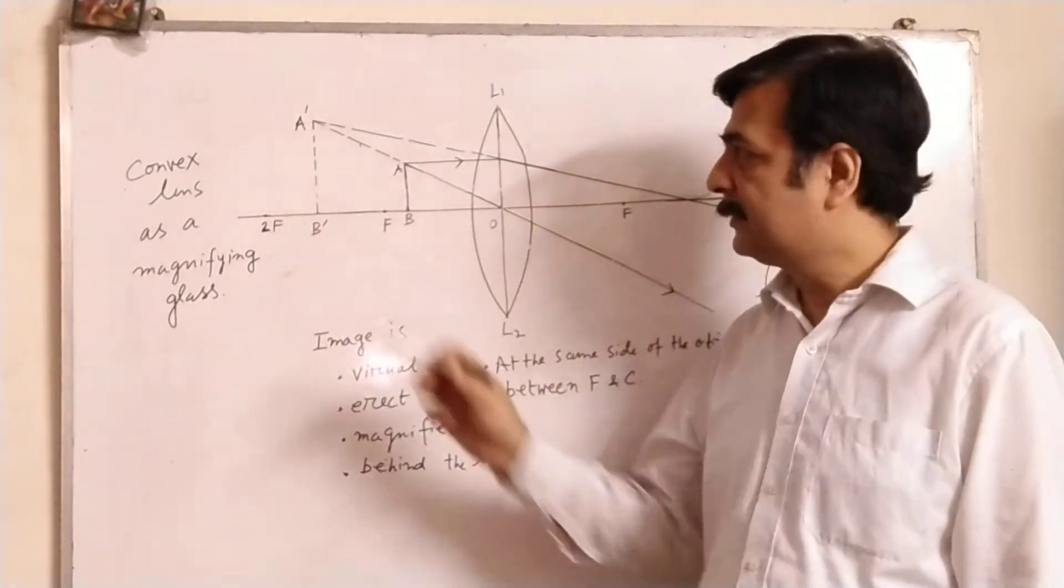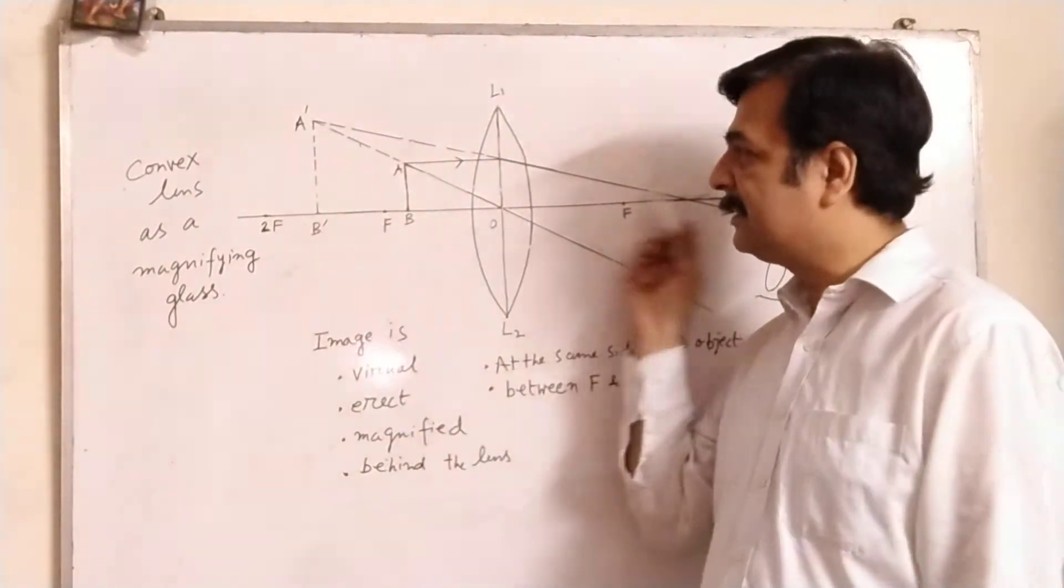Here it is the center of the lens. A B is the object. This is the principal axis. You know O is the optical center. This is the principal axis.